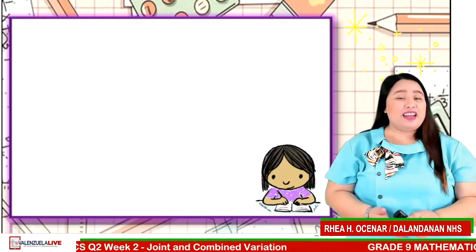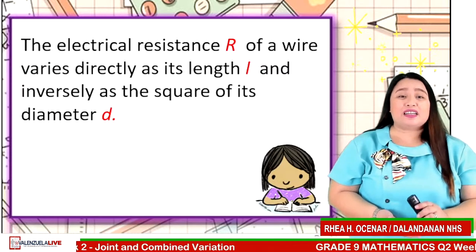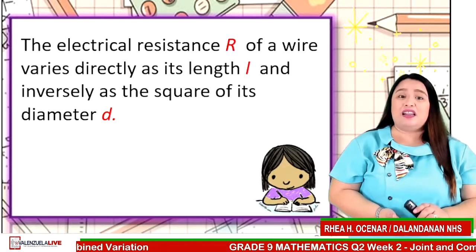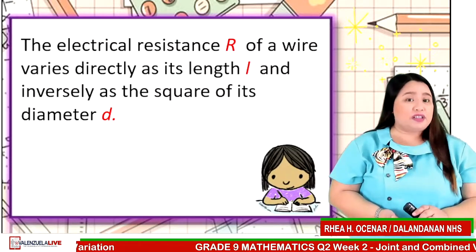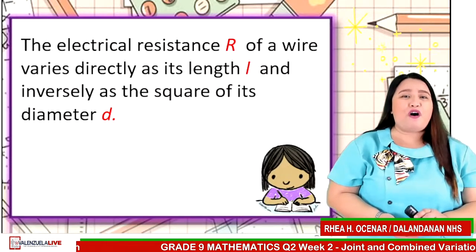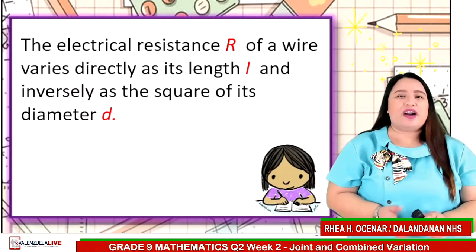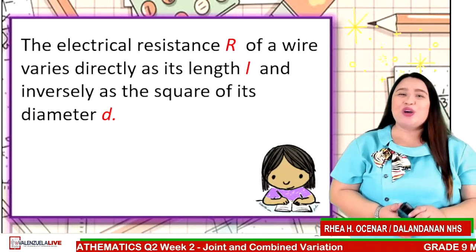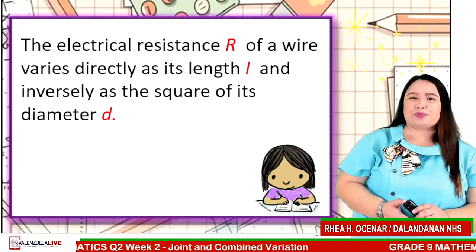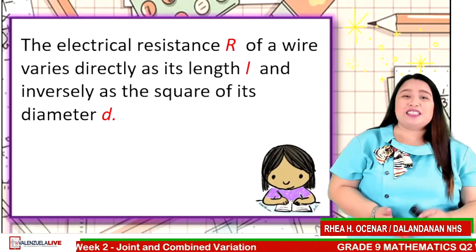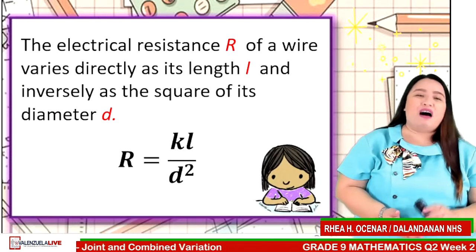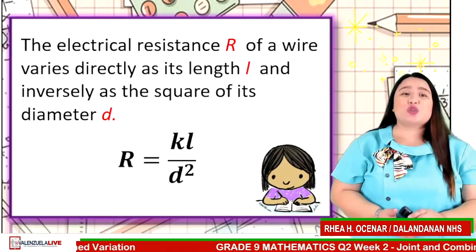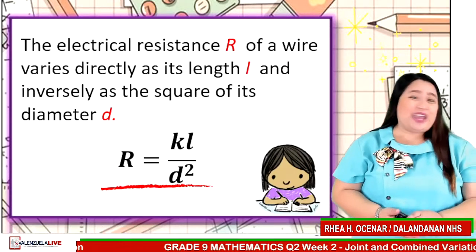Let's try the next statement. The electrical resistance R of a wire varies directly as its length L and inversely as the square of its diameter D. Write it into its mathematical equation. Comment your answer now. The answer is R is equal to KL over D squared. Did you get the correct answer?